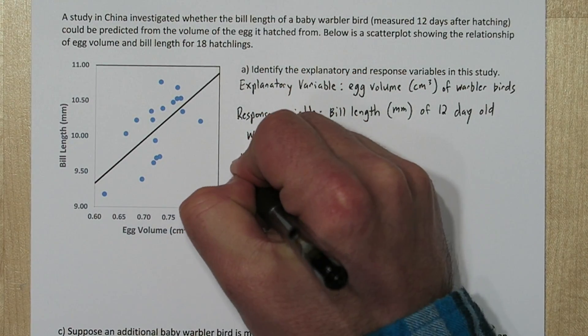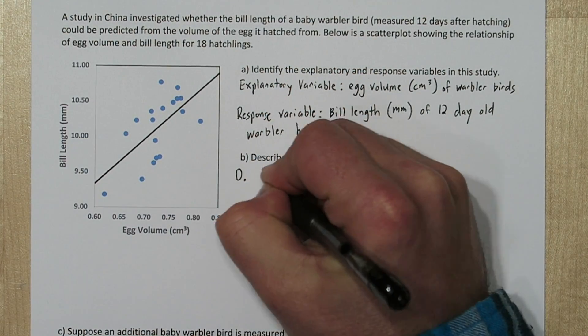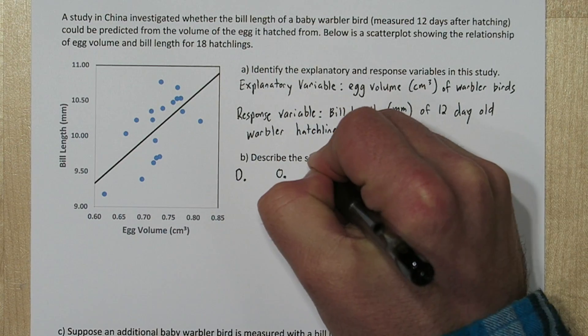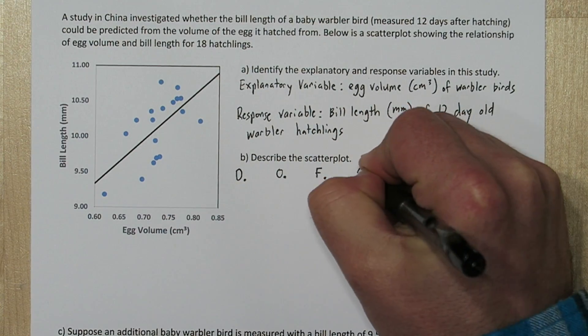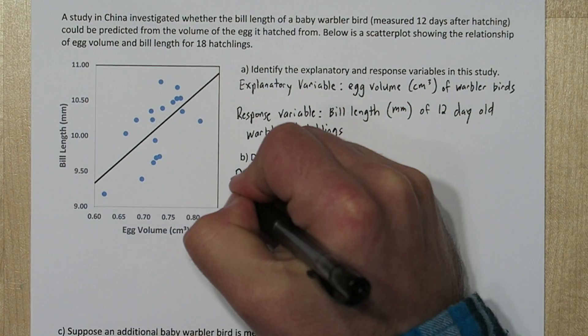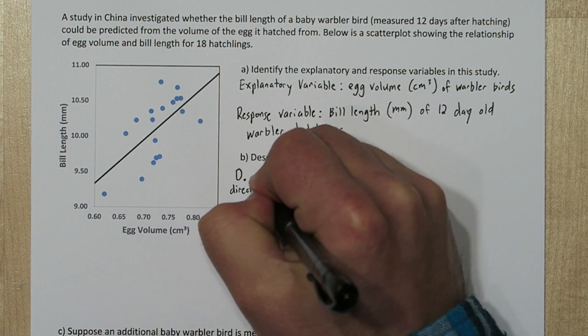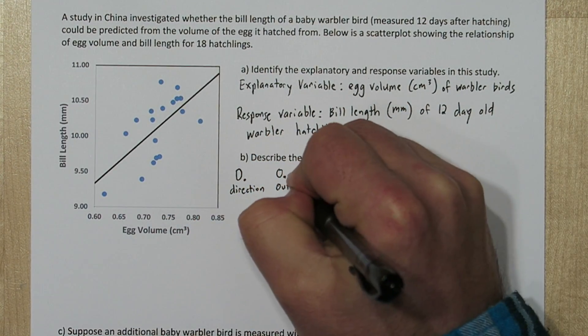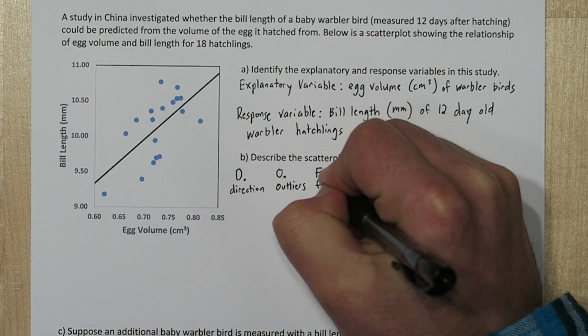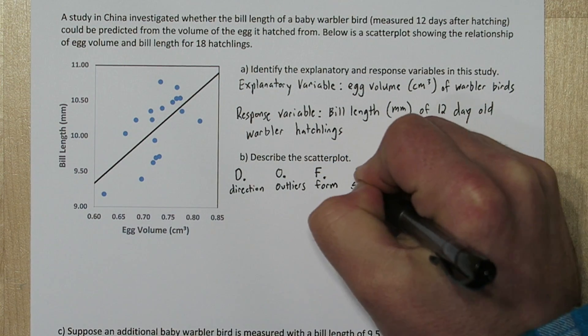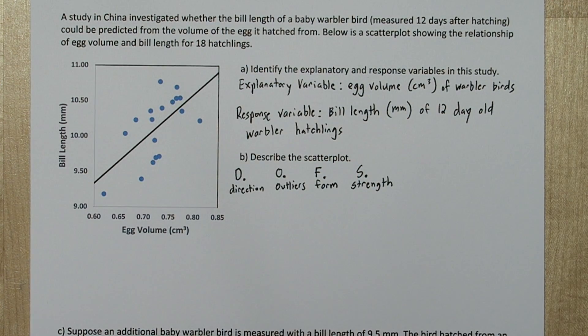There are four things you need to talk about when you describe a scatterplot. The acronym DOOFS might help. You need to talk about the direction, outliers, form, and the strength.